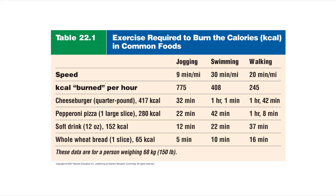Looking at this chart, I don't expect you to memorize the details, but I'd like you to see that eating certain food items — such as a cheeseburger, pepperoni pizza, or soft drink — provides a certain amount of kcals or capital-C Calories. Performing different activities such as jogging, swimming, or walking will expend a certain amount of calories over a given length of time. For example, a quarter-pound cheeseburger gives you 417 kcals of energy — enough to go jogging for about 30 minutes, swimming for an hour, or walking for an hour and 45 minutes. This relationship between consuming energy and spending energy is an important concept.